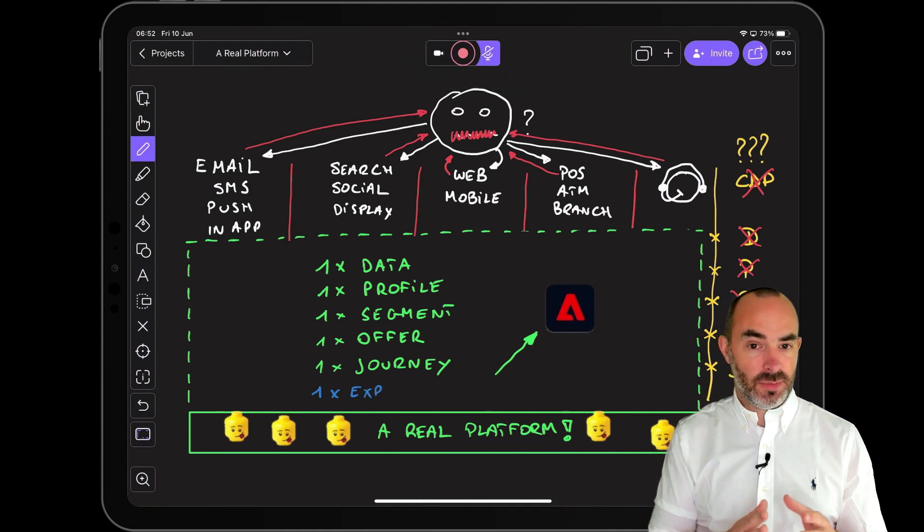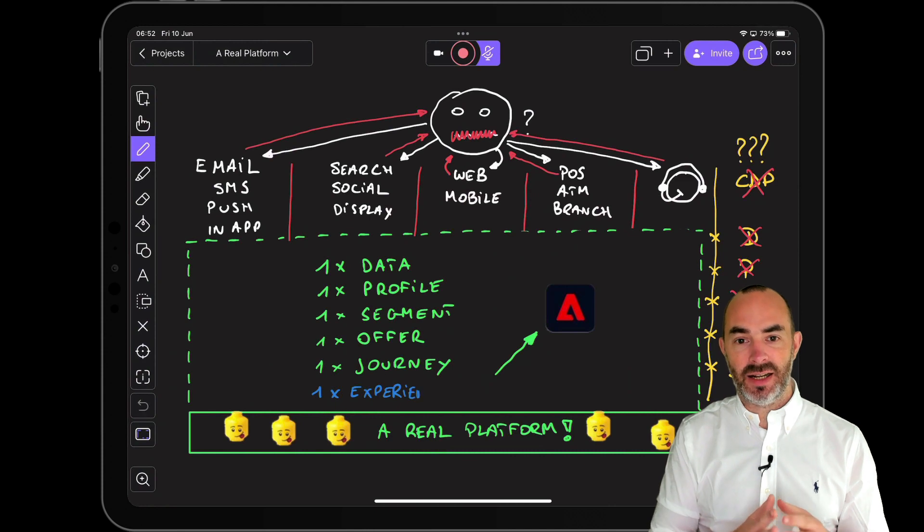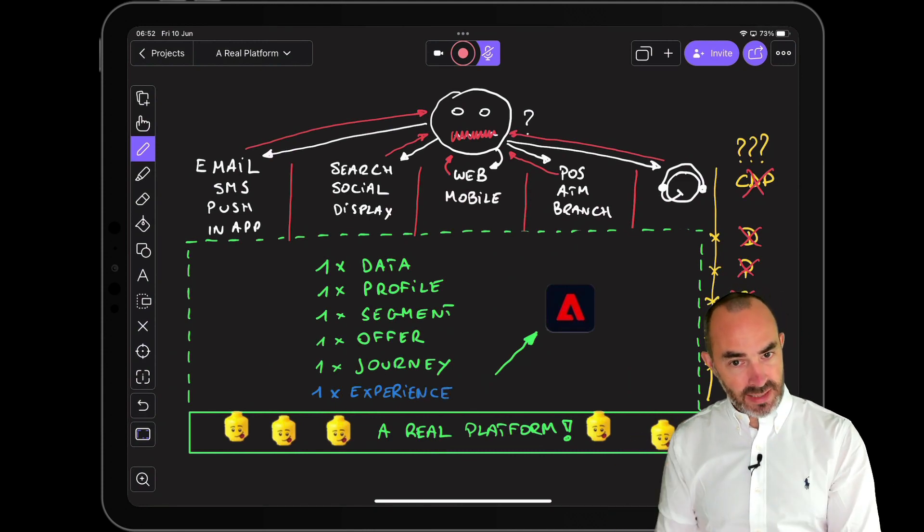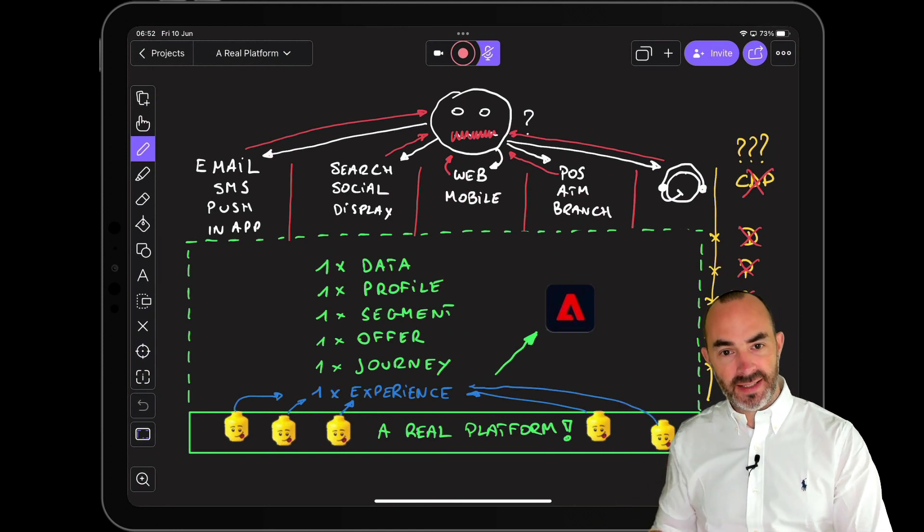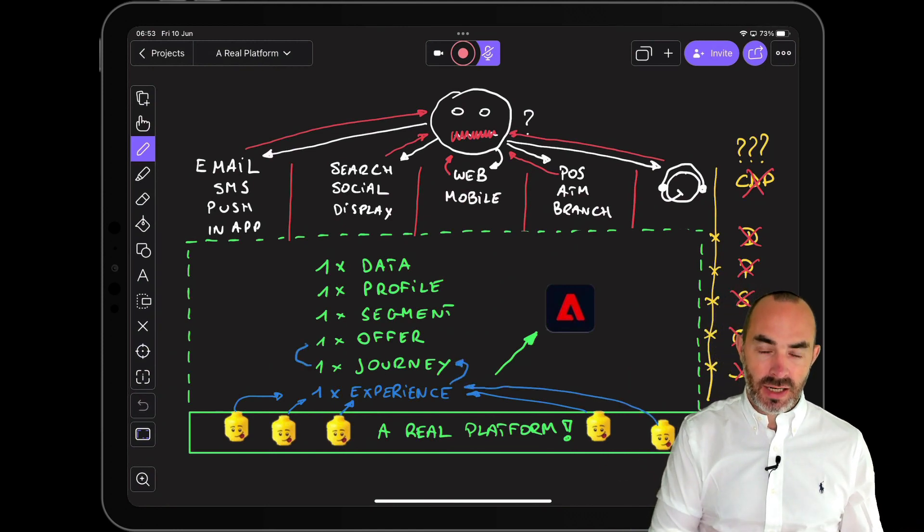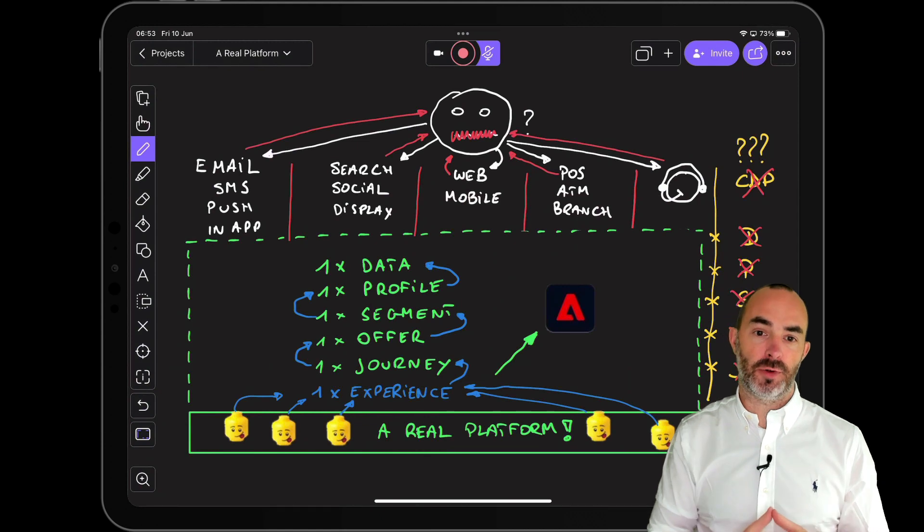The siloed teams should then take their expertise and join that expertise with the expertise of their colleagues to define a single definition of the customer experience, which then leads to journeys being defined, offers being created, segments being created, using the profile foundation and the data store of the platform.